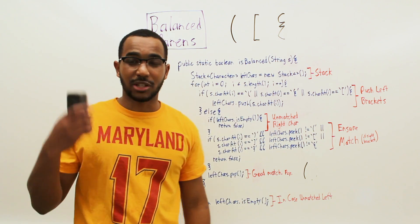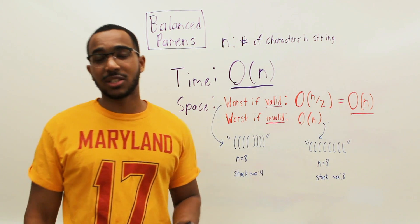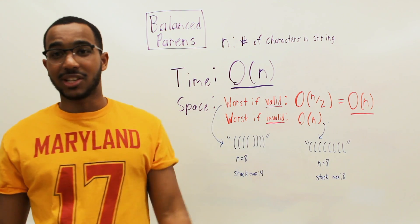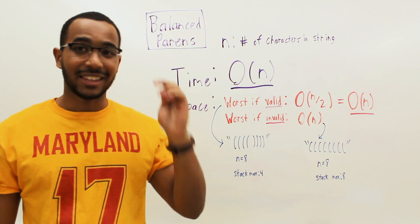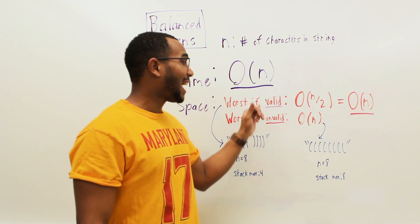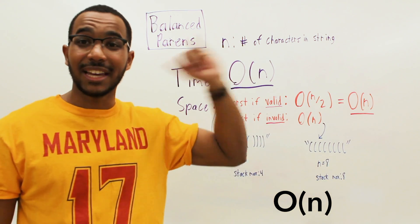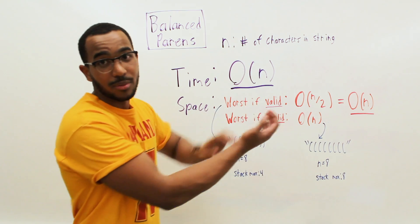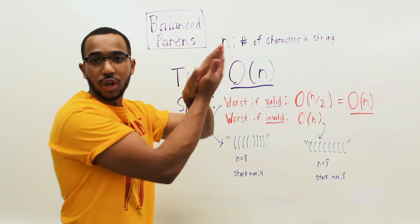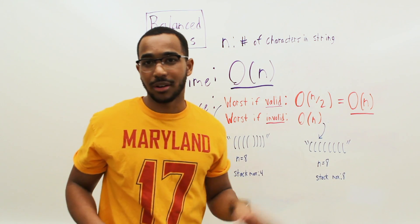Whenever we solve a problem, we think about best case, average case, and worst case time complexity. Always define your variables: here n is the number of characters in the string. We run in O(n) linear time — as input grows, runtime scales linearly. We don't worry about constants; we worry about tail behavior. For space complexity, if the string is valid, the worst case is n/2 elements on the stack, but we drop the constant, so it's still O(n). The average case, you open one and close it alternately, keeping only a small number on the stack.